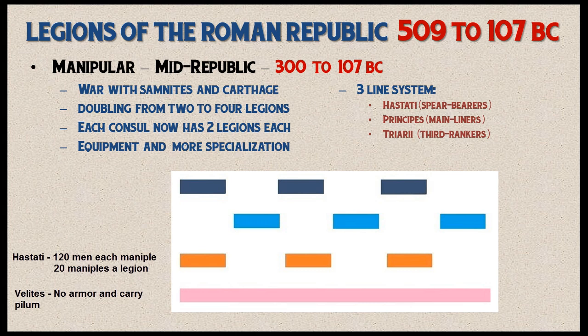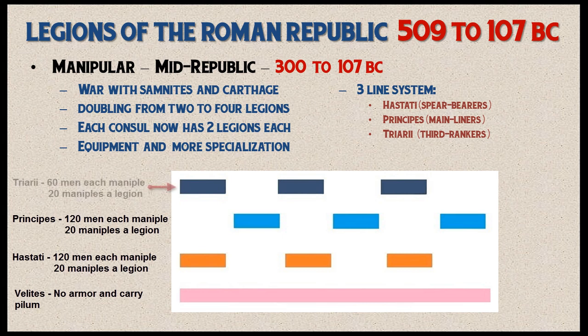The Hastati themselves could often defeat an enemy, but if they couldn't, like the velites they would retreat through the gaps and the enemy would run into the next heavy infantry line — the Principes. These were generally men in the prime of their lives, older and wealthier than the Hastati, so they could afford better equipment. They carried large shields and wore good quality armor. If they too had to retreat, the enemy encountered the final line, the Triarii, equipped with a thrusting spear and Gladius, though they used an older type of spear rather than the pilum.